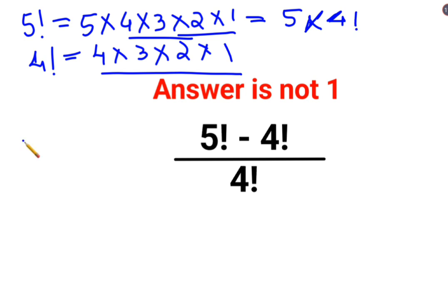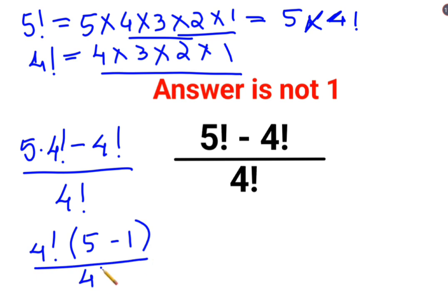So here instead of 5 factorial, I write it as 5 multiplied by 4 factorial. So 5 times 4 factorial minus 4 factorial upon 4 factorial. 4 factorial is taken out. I am left with 5 minus 1 upon 4 factorial.